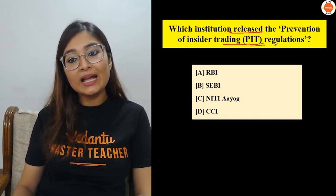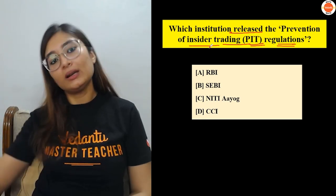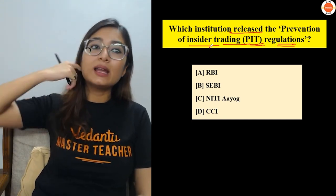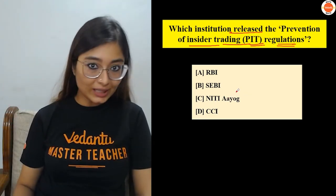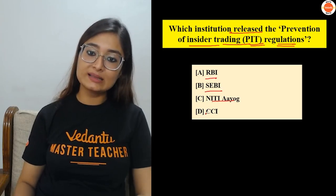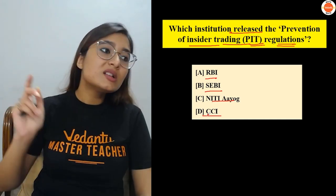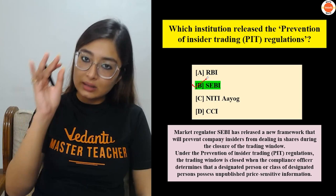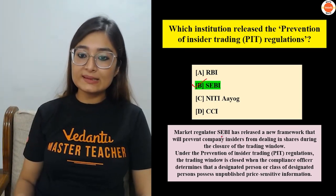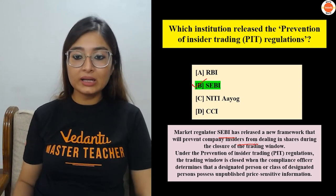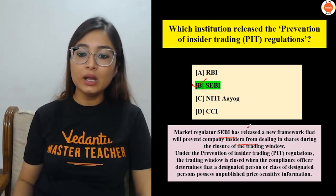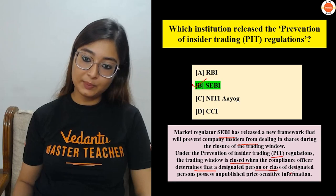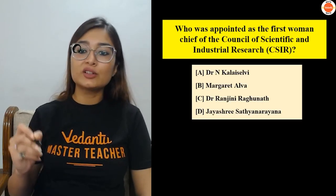Next question: Which institution released the Prevention of Insider Trading (PIT) Regulations? Insider trading is related to the stock market — big companies and investors make stock-related transactions, and regulations make these legal. Options: RBI, SEBI, NTIO, or CCI. The correct answer is SEBI. SEBI released and maintains the framework under PIT Regulations. The trading window is closed when the compliance officer determines that a designated person possesses unpublished price-sensitive information.